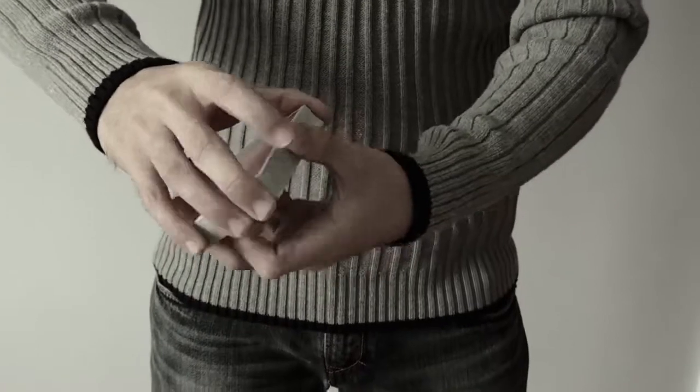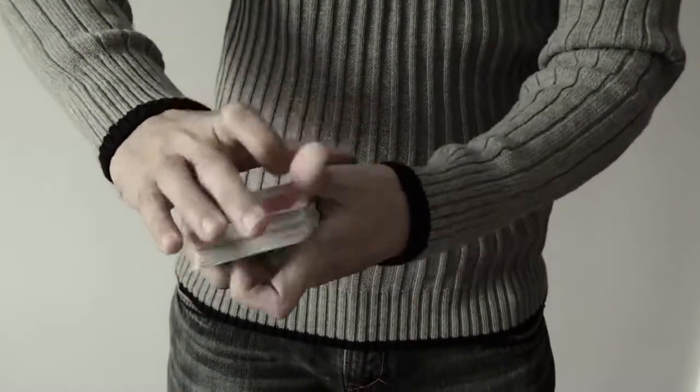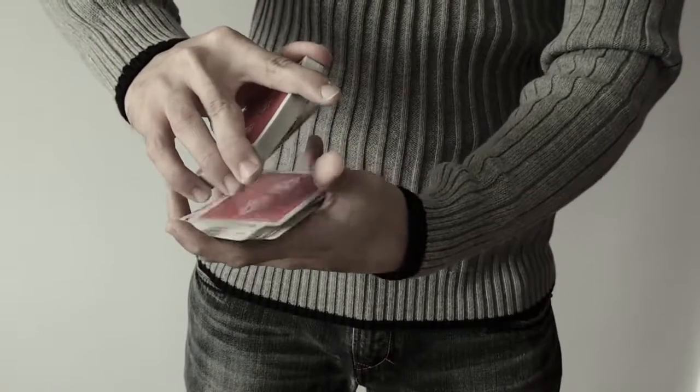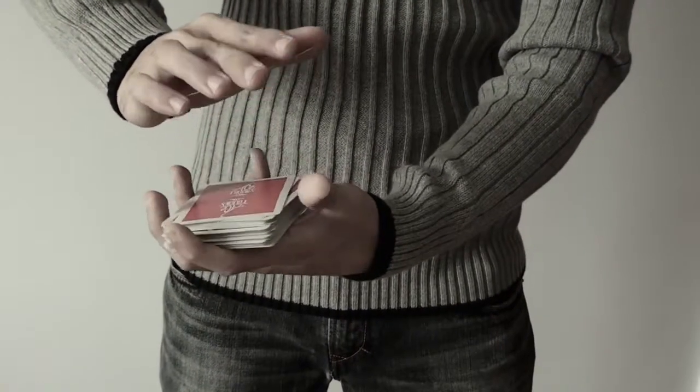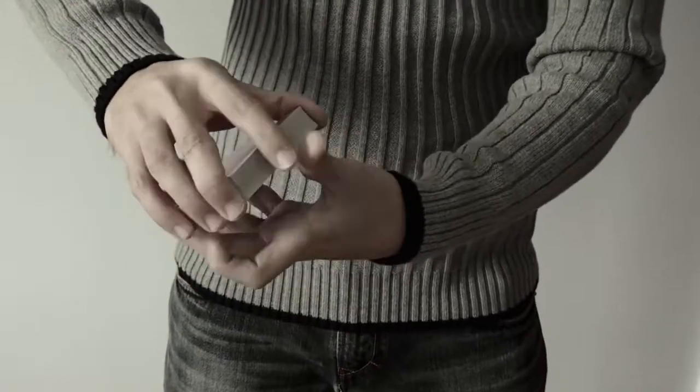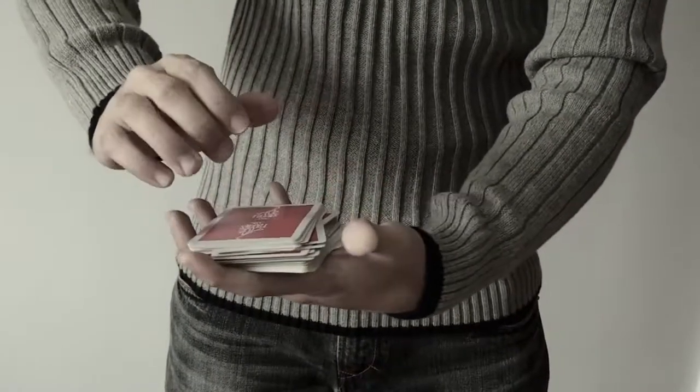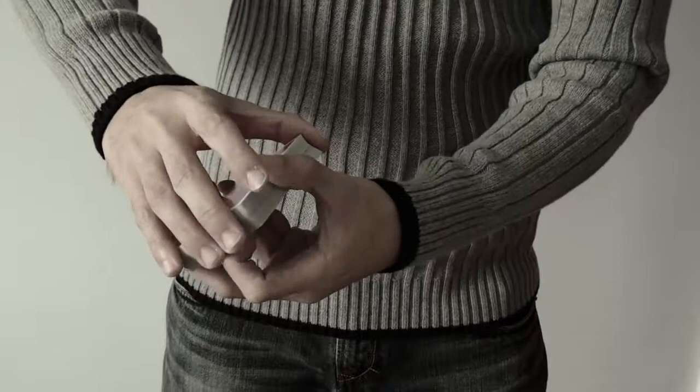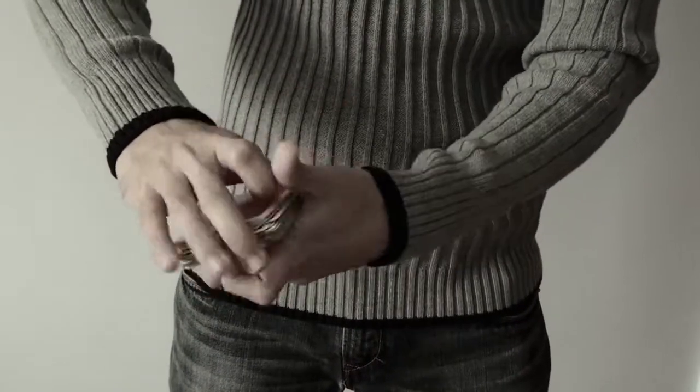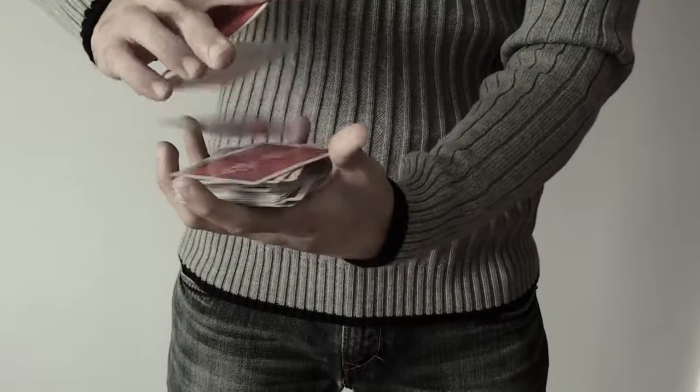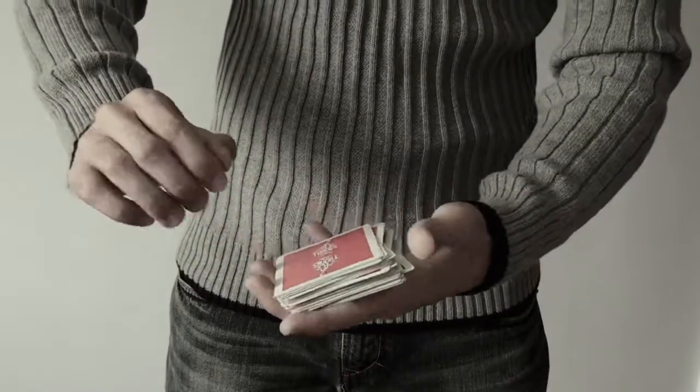Ok, so for the card dribble, after you dribble dribble dribble, the last part is chop it. The last part is chop it. So you want to do it in a smooth motion. Just as every piece falls, just chop it. That's ok.